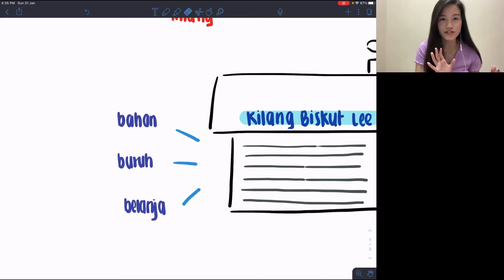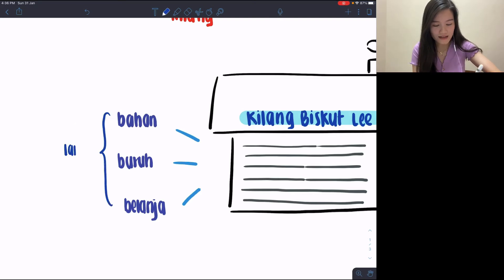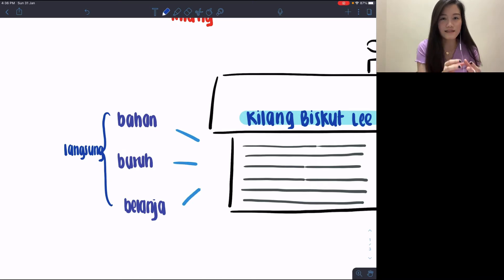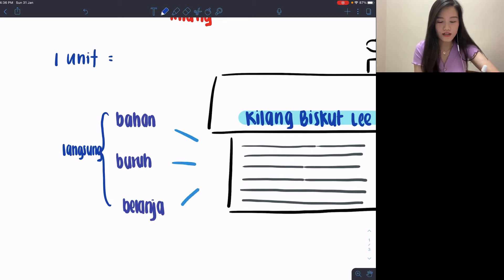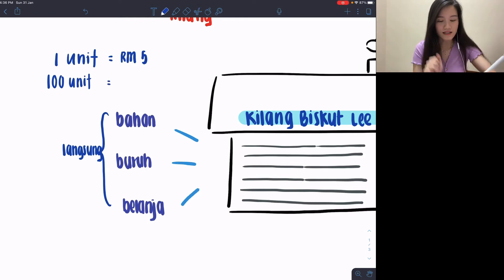Bahan, buruh, and belanja — and here my belanja refers to paten, harga pindah, and royalti — because the group itself is called belanja langsung. Whatever is in this group has the word langsung beside it, because we actually change the figure and amount according to how much we need to produce. It goes according to demand — berapakah unit yang perlu dikeluarkan. If one unit costs me five ringgit total for bahan, buruh, and belanja langsung, then a hundred units will cost five hundred ringgit.